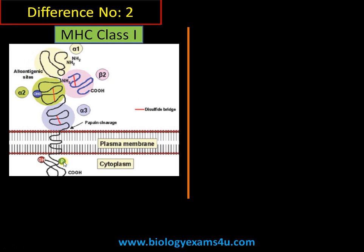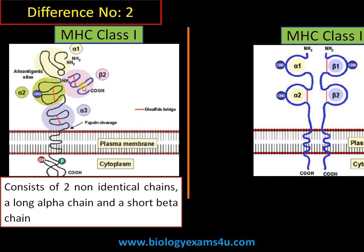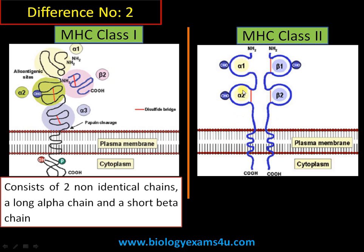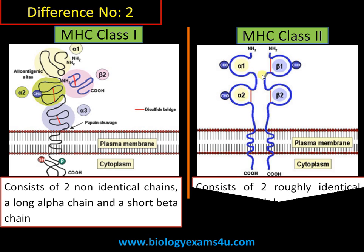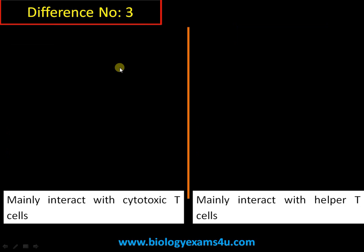Difference number two is regarding structure. MHC class 1 is a heterodimer consisting of two polypeptide chains: an alpha chain and a small beta chain. The alpha chain has a cytoplasmic region, a transmembrane region, and an extracellular region responsible for binding with antigenic peptide. The extracellular domain contains alpha 1, alpha 2, and alpha 3 regions. Alpha 2 and alpha 3 are constant, while alpha 1 is a variable region responsible for antigenic binding. The beta chain is called beta-2 microglobulin. In MHC class 2, there are also two chains — alpha and beta — of almost identical length, with the alpha 1 and beta 1 amino terminal regions being variable and responsible for binding antigenic peptide.